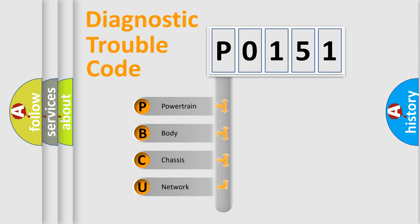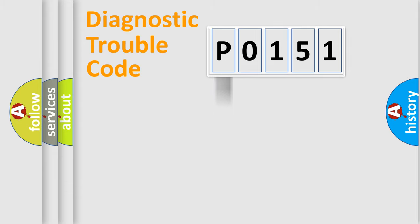We divide the electric system of an automobile into four basic units: Powertrain, Body, Chassis, and Network. This distribution is defined in the first character code.